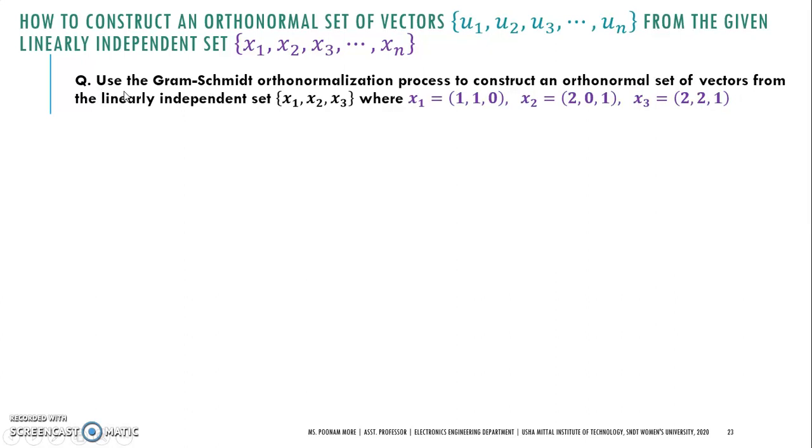The problem statement is: Use the Gram-Schmidt orthonormalization process to construct an orthonormal set of vectors from the linearly independent set X₁, X₂, X₃, whose values are shown here.